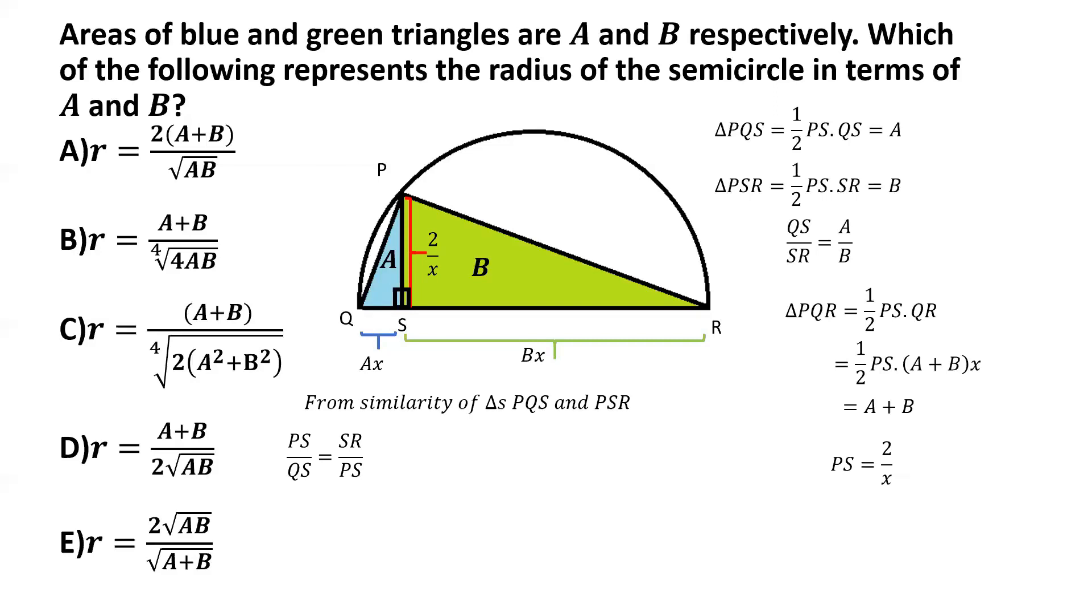So here, if we take the ratio of the two sides, PS by QS for triangle PQS, the corresponding sides for triangle PSR would be SR and PS. So PS by QS will be equal to SR by PS.